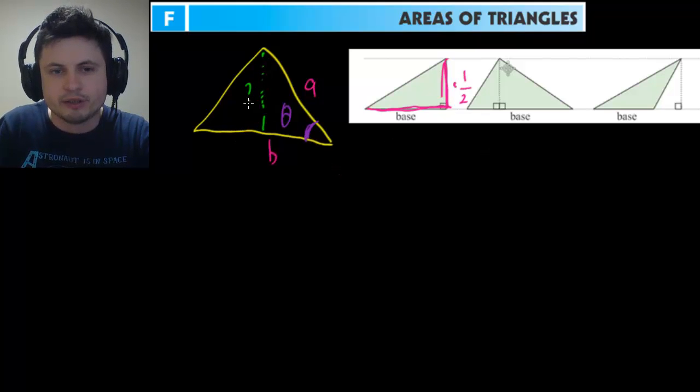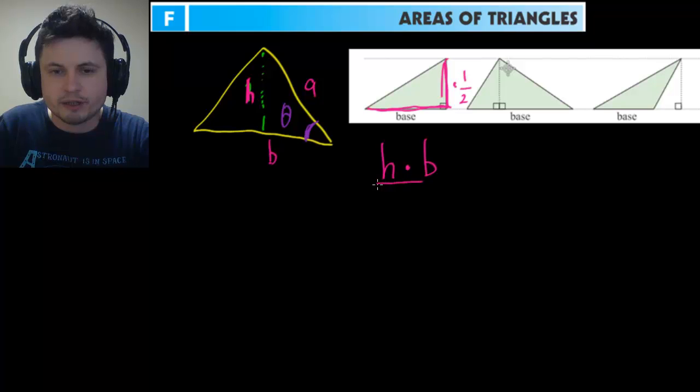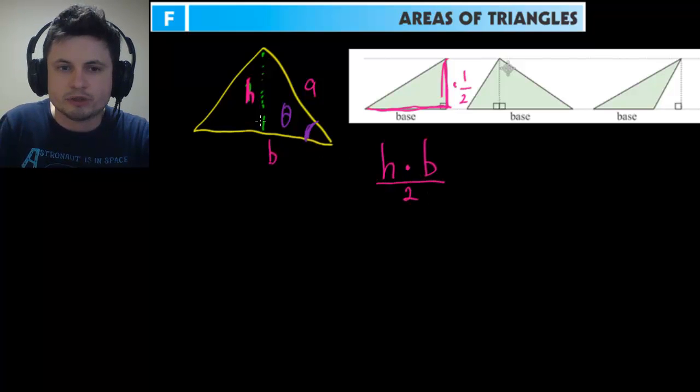Now in this case we don't have a height so we need to find the height somehow. So what would the area of this particular triangle be? Well it would be this height that we don't have—this height h—times b, which is the base here, and then all of this divided by two. Now what's missing is height.